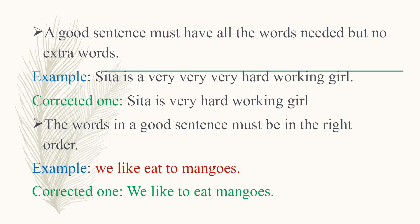The words in a good sentence must be in the right order. Example: 'We like eat to mangoes.' The words are not arranged in proper order and hence the sentence does not convey any proper meaning. Rearranging it: 'We like to eat mangoes.' This is a proper sentence with meaning.